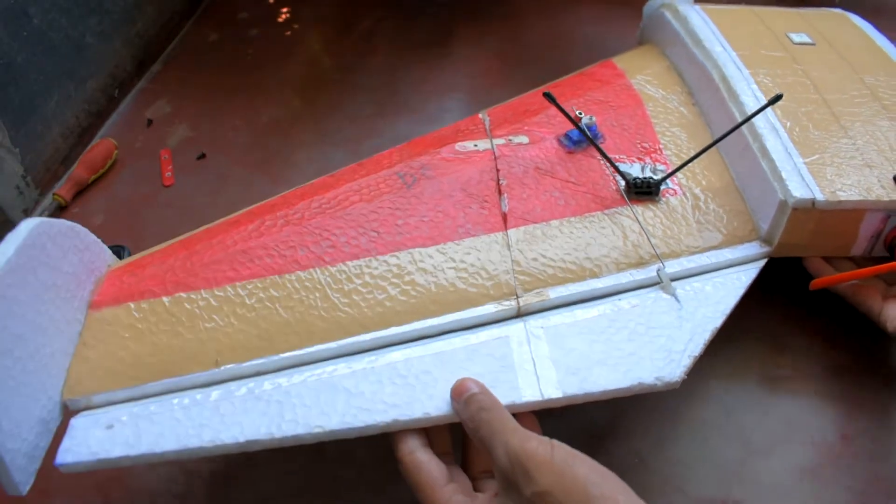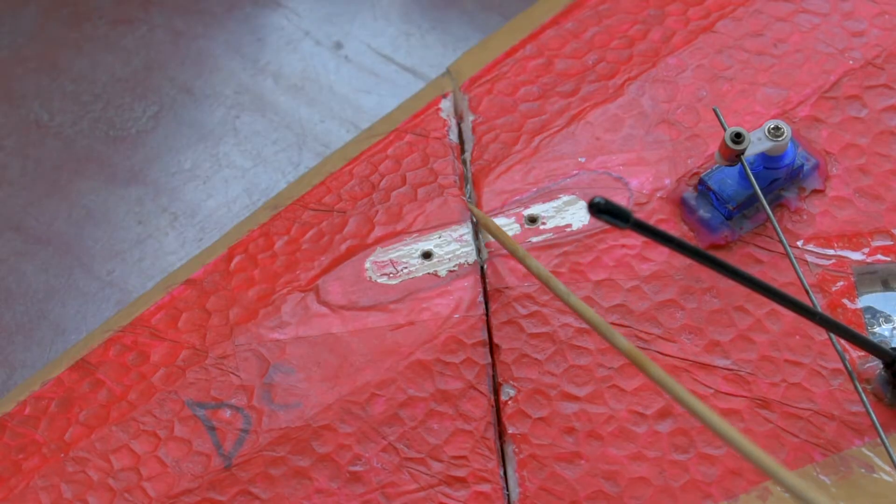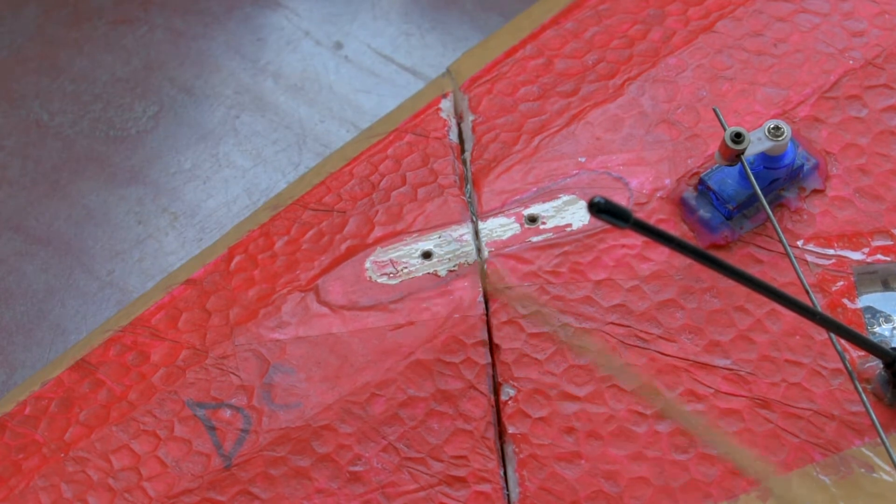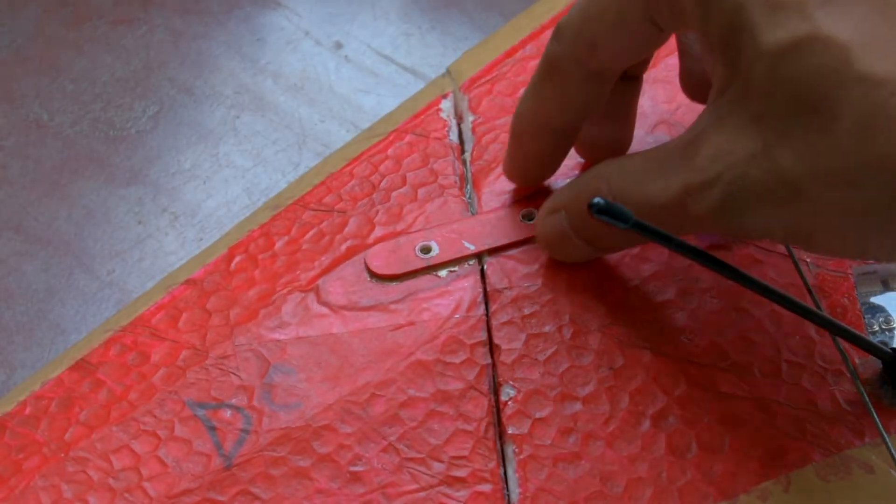Now you need to make a lock for this hinge. For this purpose I used ice cream sticks. So I take an ice cream stick and cut it in half and paste here, and then take another stick and fixed it over it with the help of some screws.